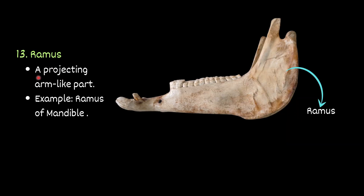Ramus — a projecting arm-like part. For example, the ramus of the mandible.